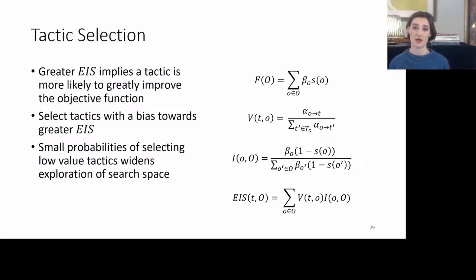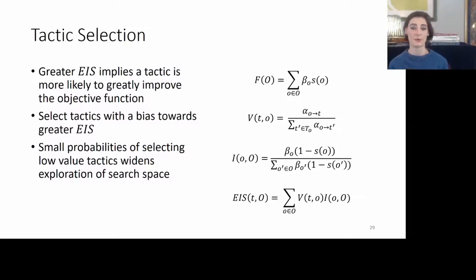Conceptually, a greater EIS score, or expected improvement score, implies a tactic is more likely to greatly improve an objective function. We select tactics with a bias towards the ones that have the greatest EIS score, but we leave some small probability of selecting low-value tactics, which widens our search space.